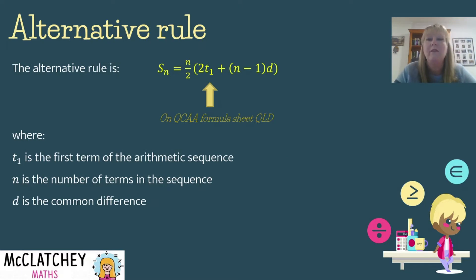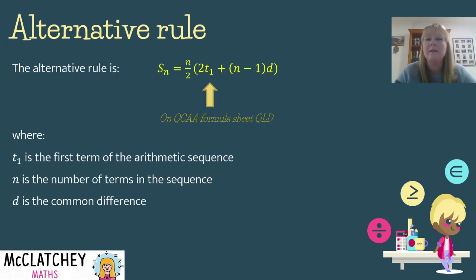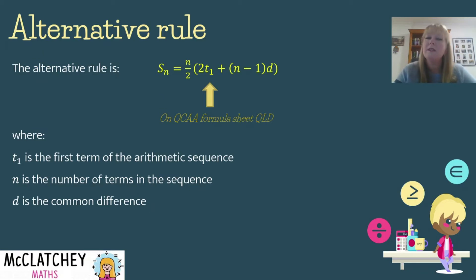There is also an alternative rule on the QCAA formula sheet. The sum of all the numbers in the series equals half the number of terms, multiplied by two times the first term plus the number of terms take away 1, multiplied by the common difference. So if you don't know the last term but you know the first term and the common difference, you can use this formula to find the sum.